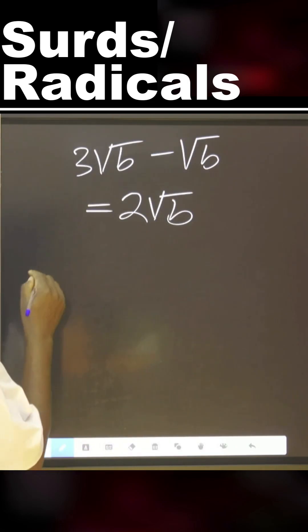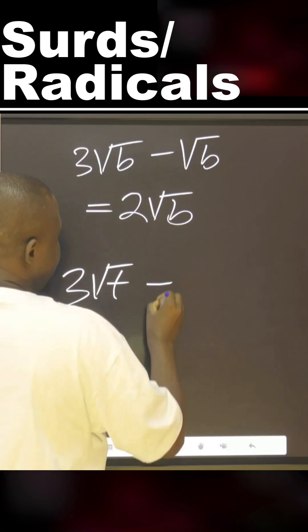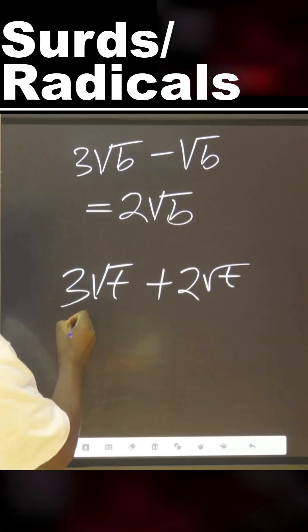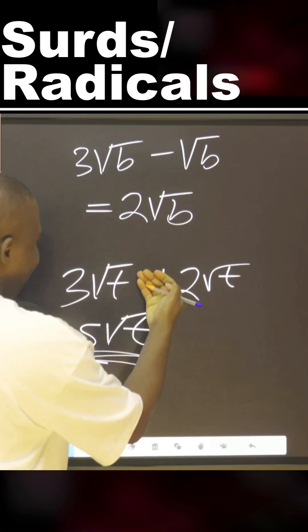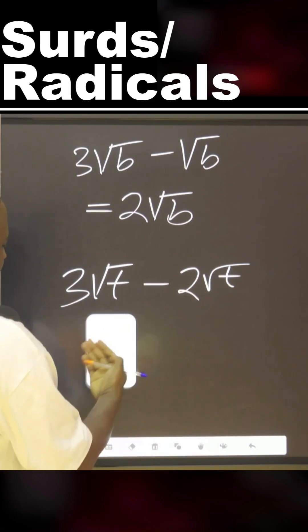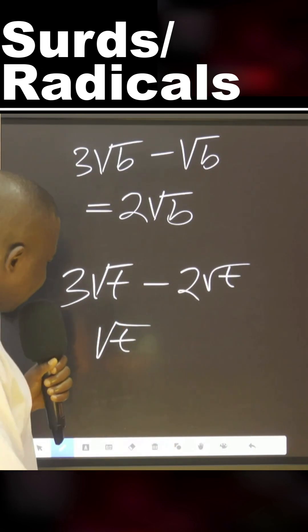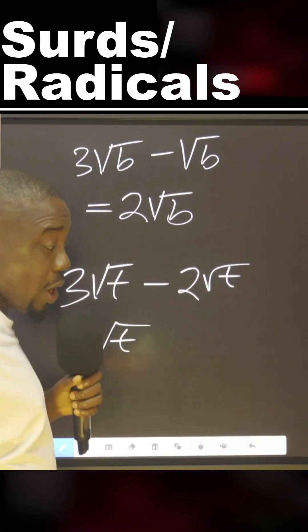If you have three square root of T plus two square root of T, you can have this to be five square root of T. And if it was subtraction, you agree with me, you have just square root of T because just one square root of T. This one means one, one square root of T.